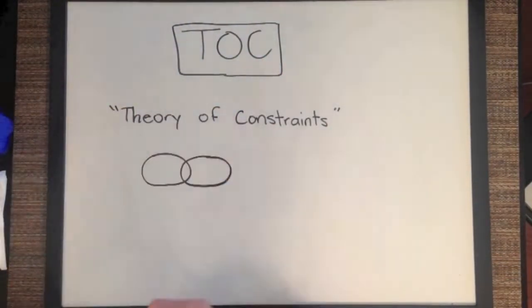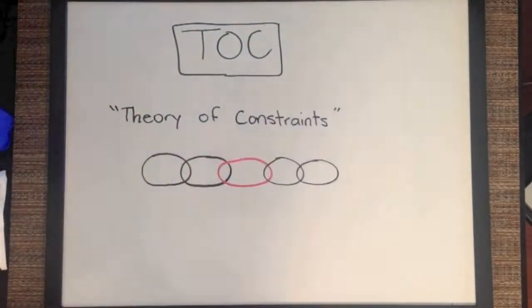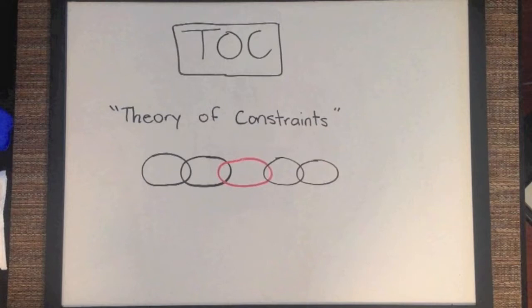TOC stands for Theory of Constraints. TOC is based on the idea that a chain is only as strong as its weakest link. In manufacturing, this means that the throughput of your system can only be as fast as the throughput of the slowest part of that system.